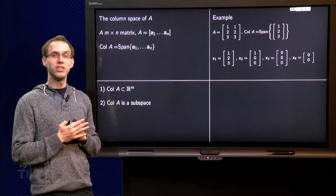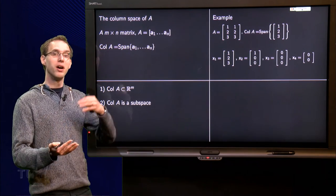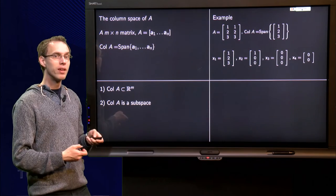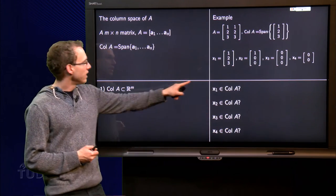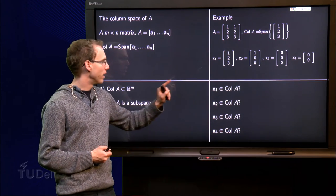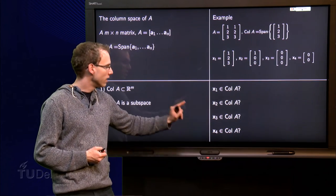And the question for all these vectors is, are they in the column space of A or not? So here are the four questions: Is x1 in the column space of A, x2, x3, and x4?